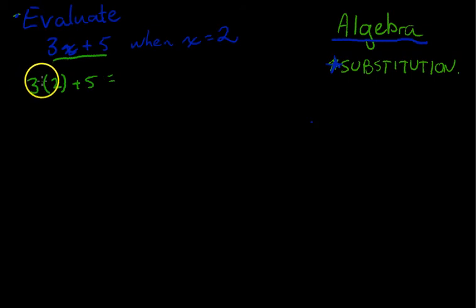Now that means 3 bracket 2. That means 3 times 2. That means there's a little times sign in there. 3 times 2 is going to be 6. So 6 plus 5, and we've solved it. We've evaluated 3x plus 5 when x equals 2. We subbed in 2, and we ended up with 11.